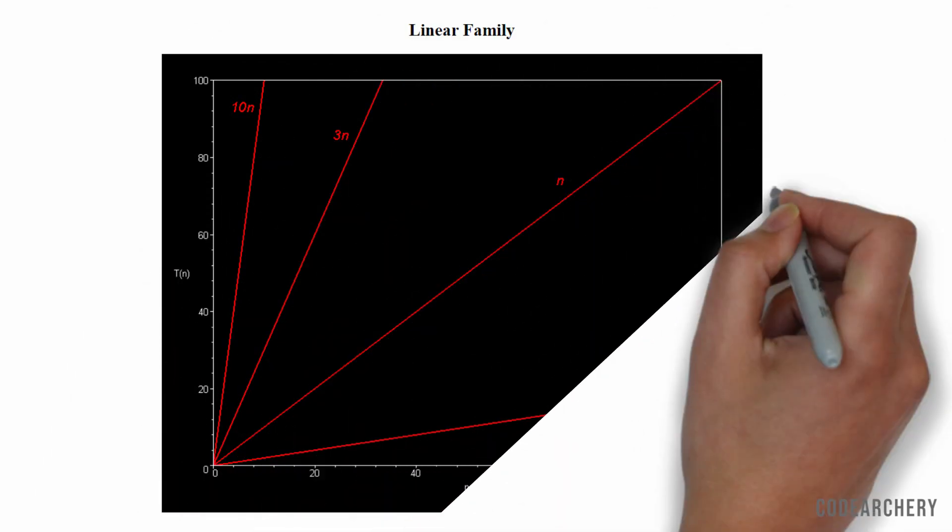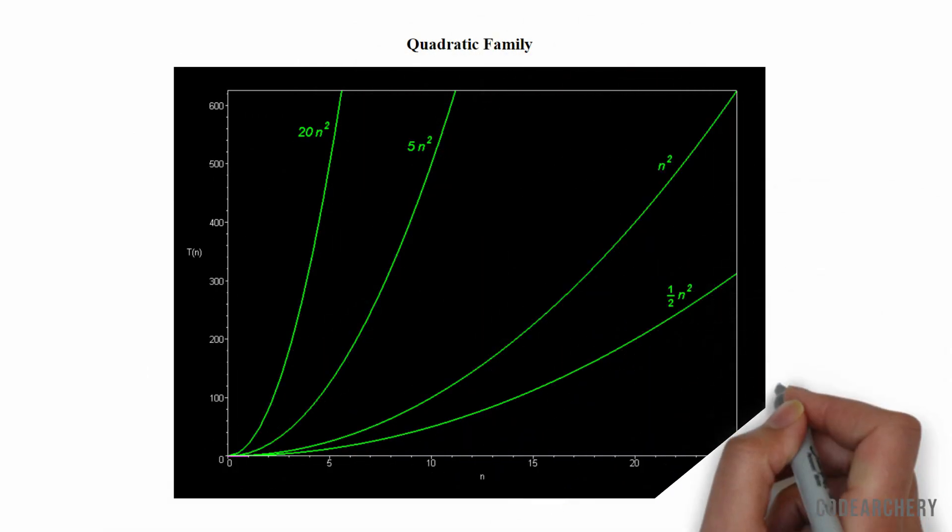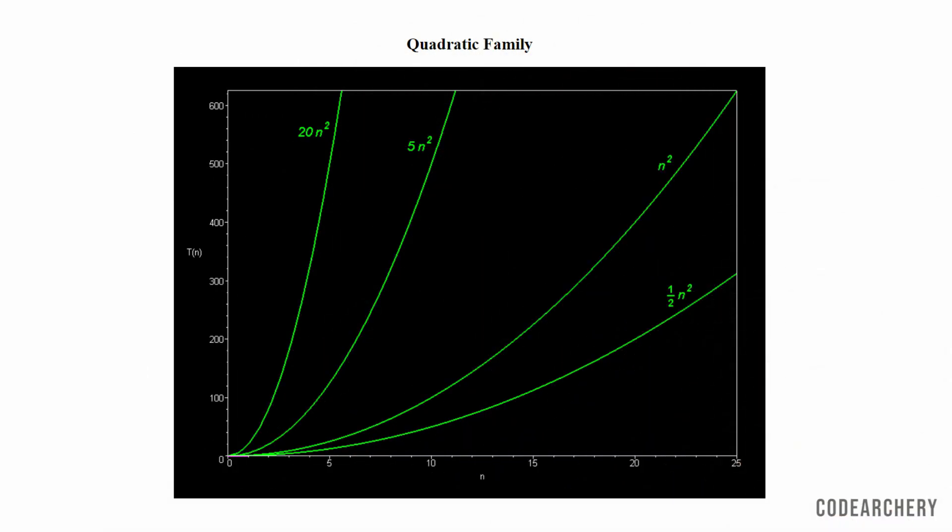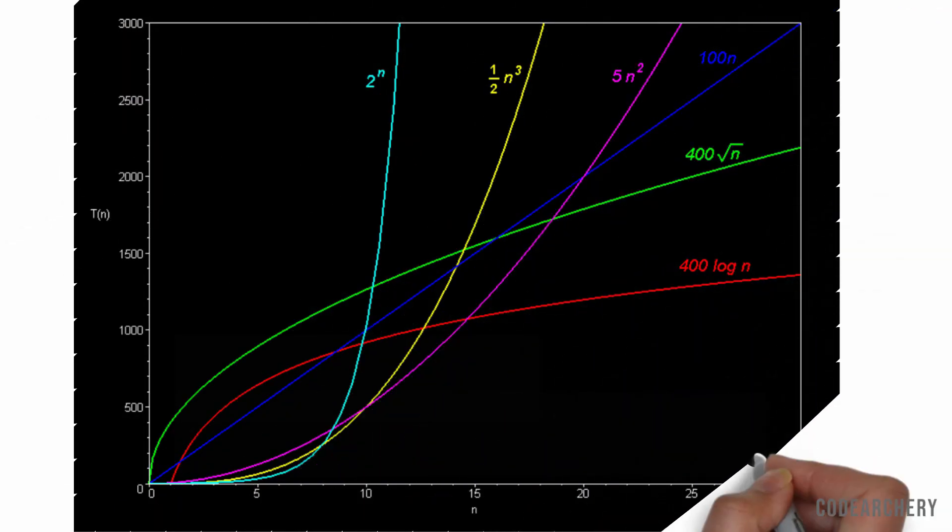So, linear algorithms are just straight line. Quadratic family have a bit curve. Now, this is a cubic family. Even for small inputs, they take a huge time. So, if we sum up all these families in one graph, the graph will look like this.